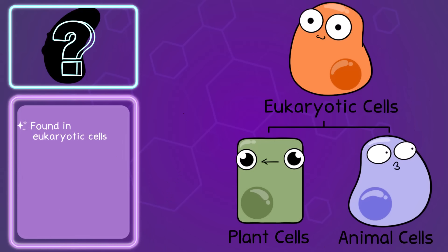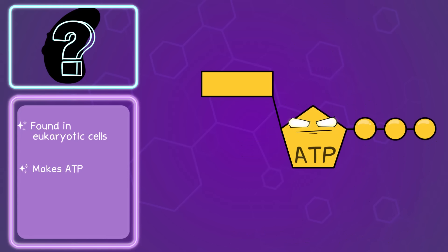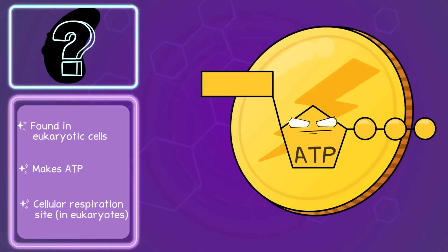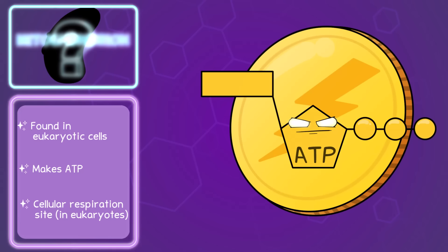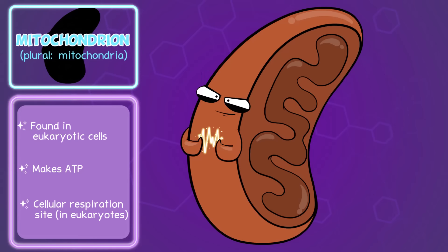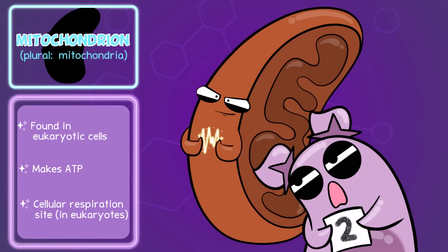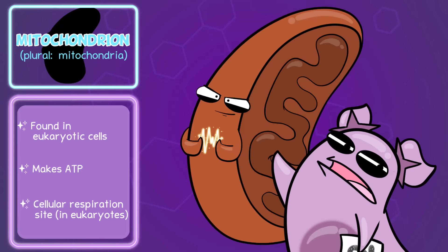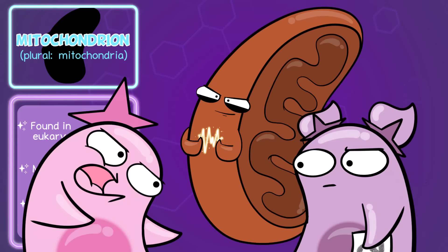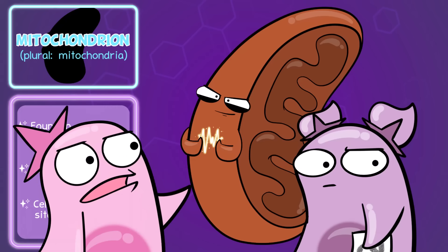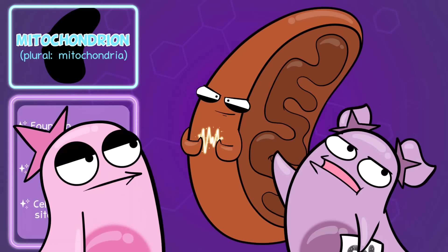This next one is found in eukaryotic cells, both plant and animal cells. This makes the ATP in cellular respiration. ATP is an energy currency. So what's this one? It is the mitochondrion, or plural, mitochondria. 2 out of 10. This one has way too many memes about being the powerhouse of the cell. All right, but it is a very important organelle — ATP is needed for so many cellular processes. Fine.